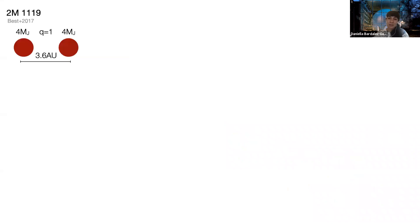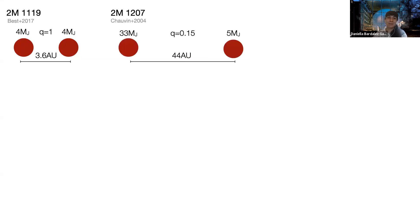I want to highlight a few systems that I think are really interesting to understand how system architectures can imply something about formation. We have systems like 2M1119, which I mentioned earlier — in this case we have two objects that are likely four Jupiter masses, so the mass ratio is one, and the separation is very close. This is probably a very low-mass binary system.